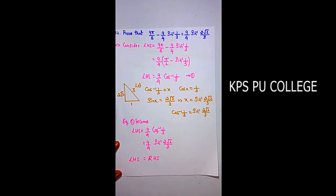Question 12: Prove that 9π/8 - (9/4)sin⁻¹(1/3) = (9/4)sin⁻¹(2√2/3). Consider the LHS: 9π/8 - (9/4)sin⁻¹(1/3).